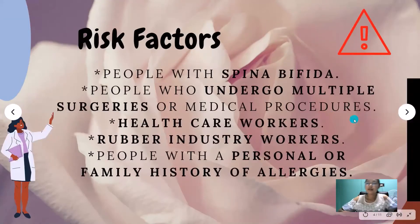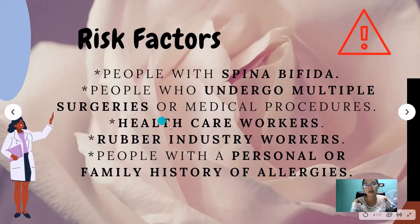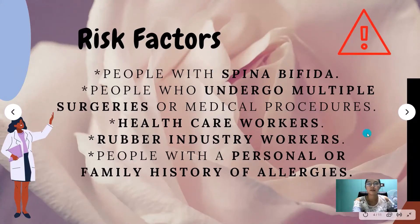The radio allergosorbent test is used to identify immunoglobulin E antibodies in the blood. Risk factors include people with spina bifida, people who undergo multiple surgeries, healthcare workers, rubber industry workers, and personal or family history of allergy.